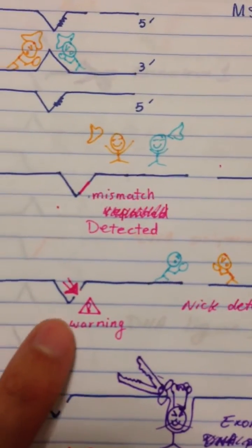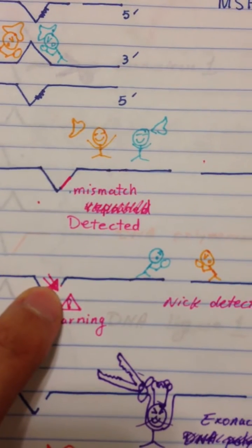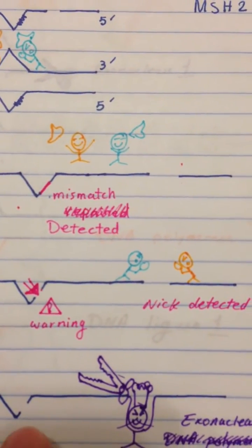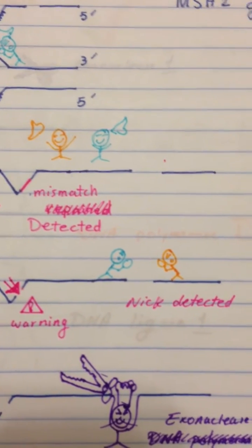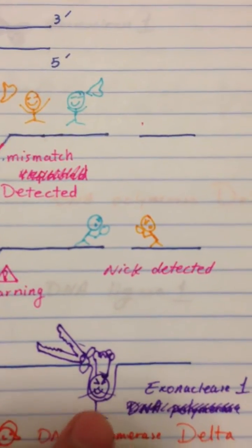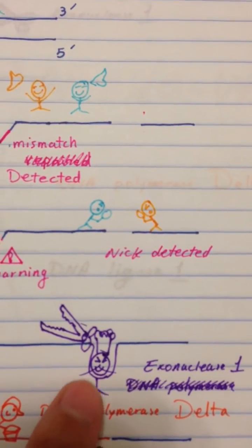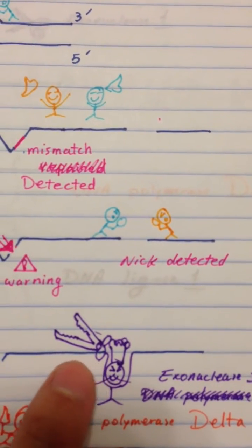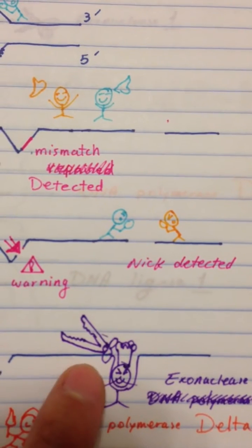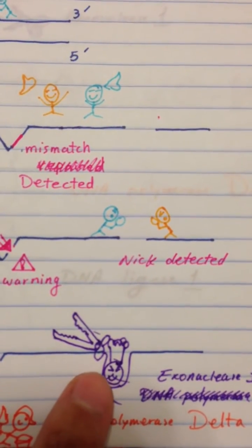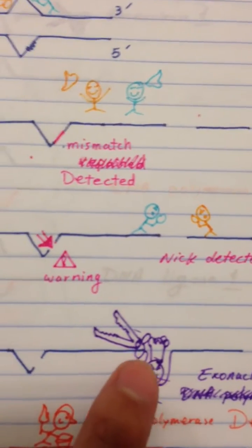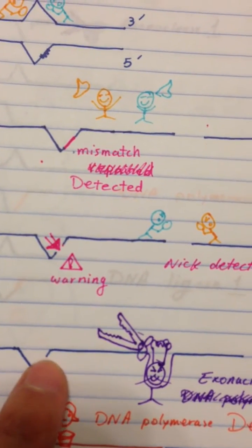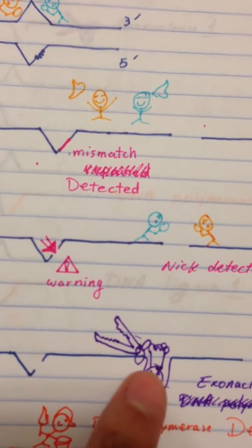So here's the warning, here's the mistaken part. This complex now is done, they did their job well. Now it's the turn of the exonuclease, which is the enzyme that has exonuclease activity. This means that the whole part of the DNA which includes the mistaken part...